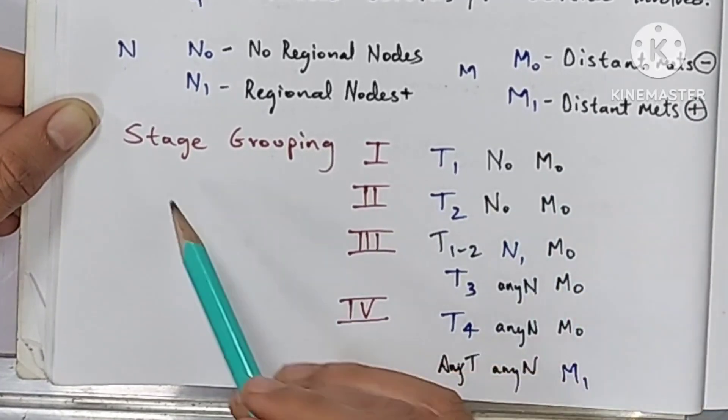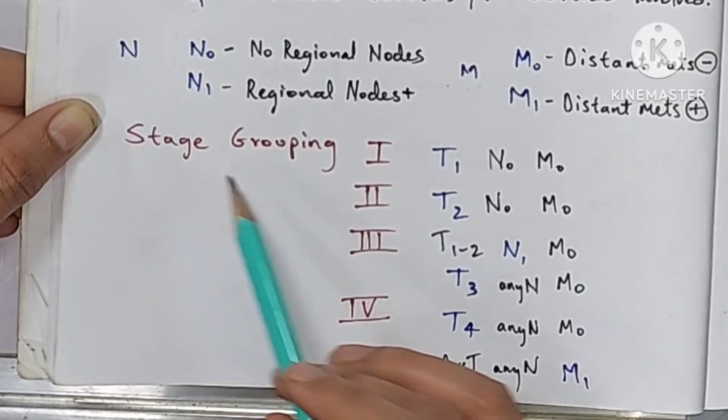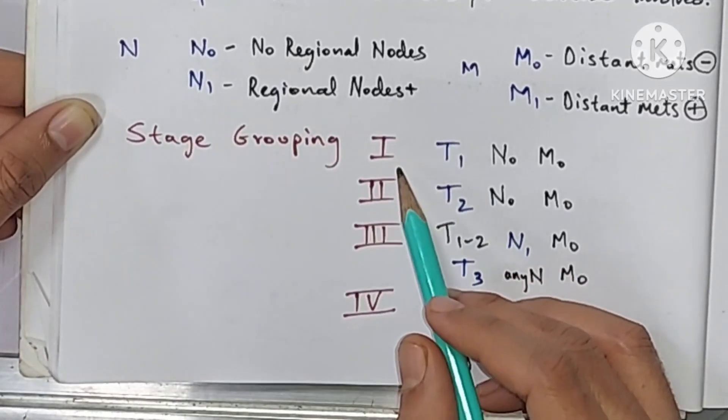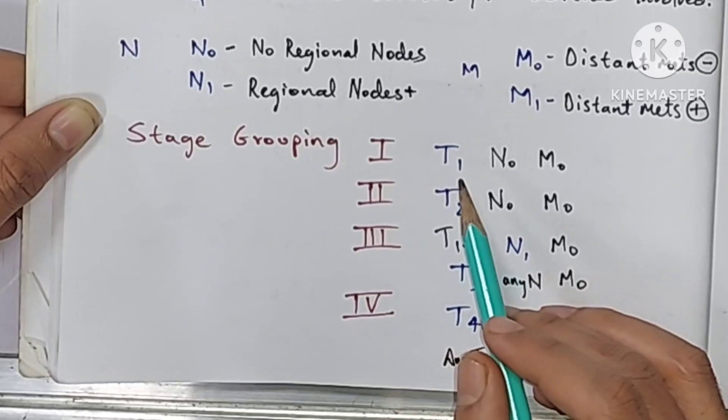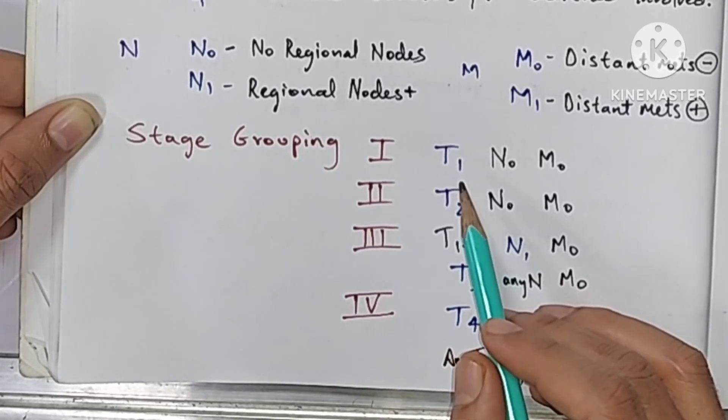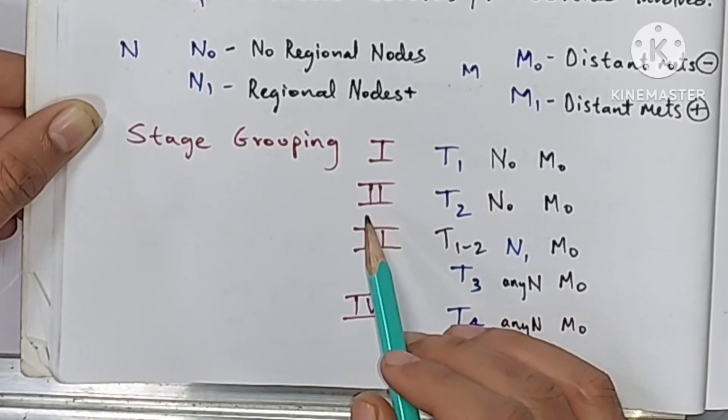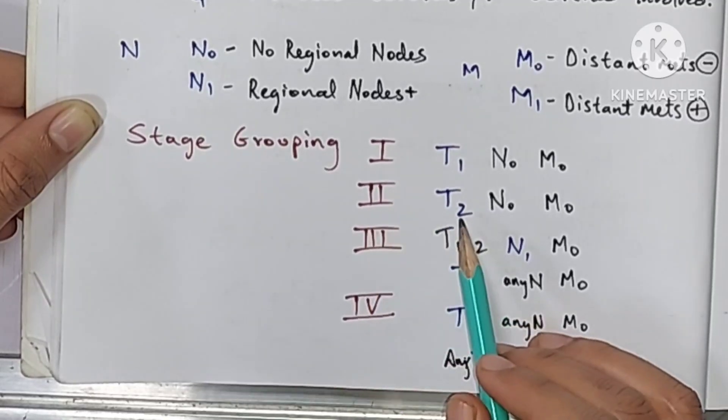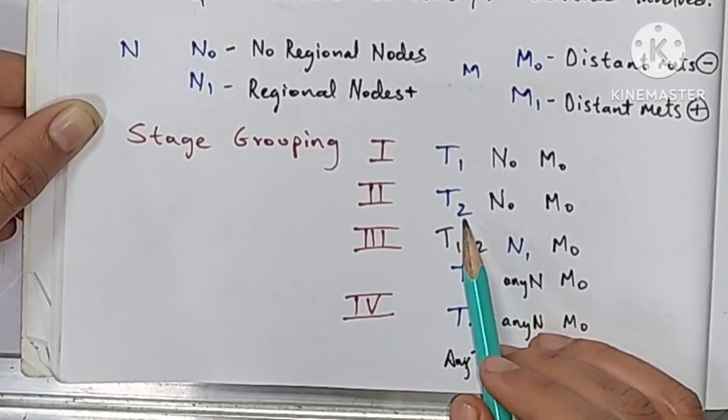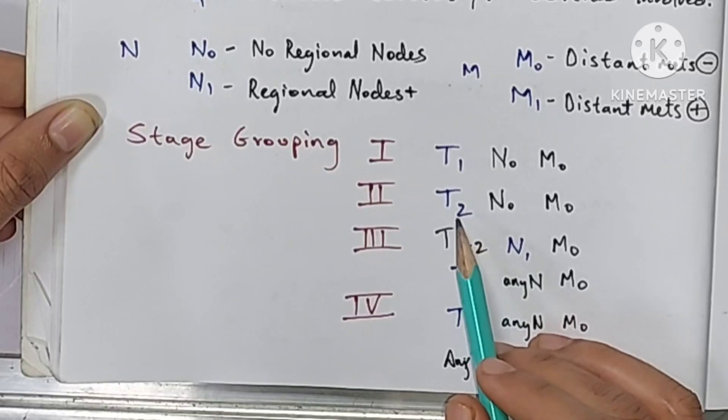Then we see the stage group. Stage 1 when the tumor is T1, that is less than 7 centimeter. Then stage 2, that is T2, that is 7 to 10 centimeter.